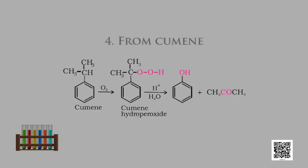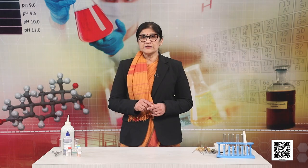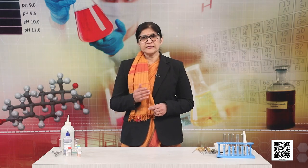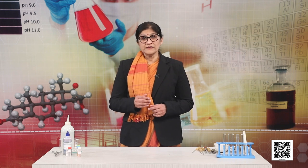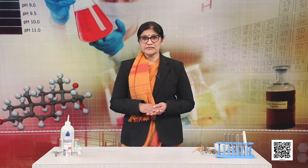The fourth method is from cumene. Phenol is manufactured from the hydrocarbon cumene — isopropylbenzene is oxidized in the presence of air to cumene hydroperoxide, which is then converted to phenol and acetone by treating with dilute acid. Acetone is also obtained in large quantities as a by-product of this reaction.